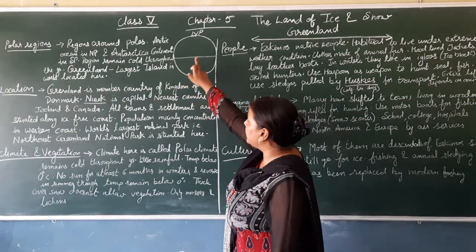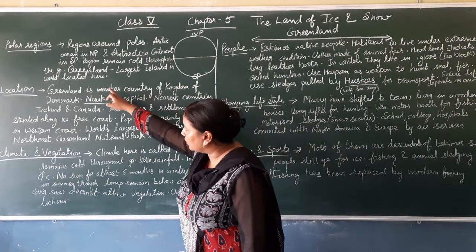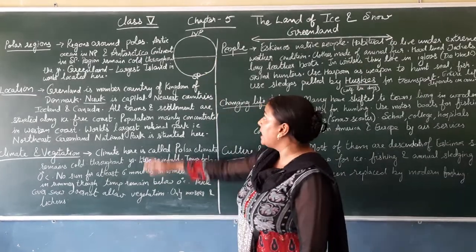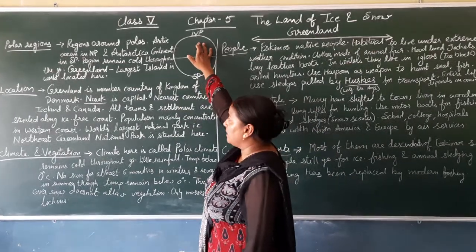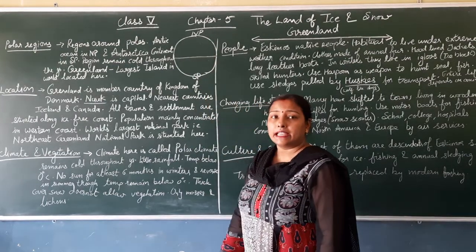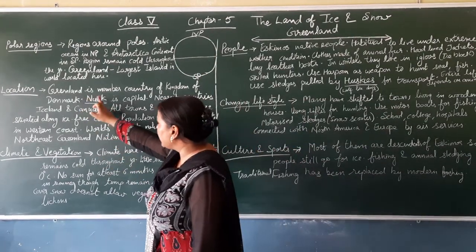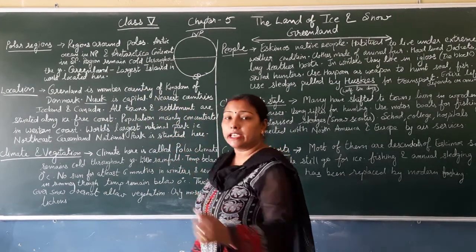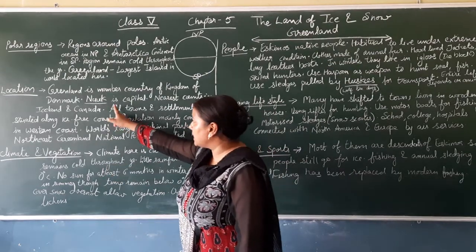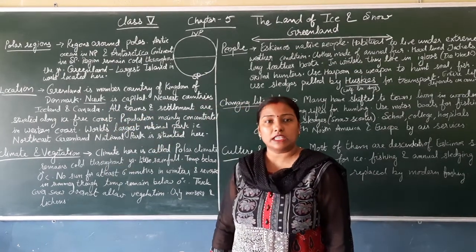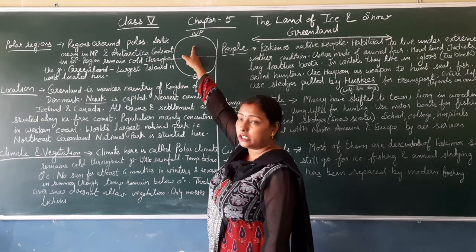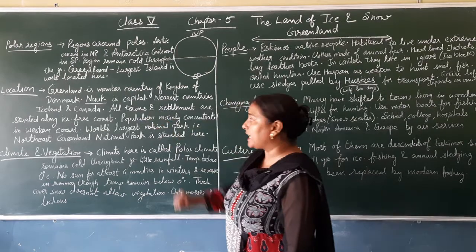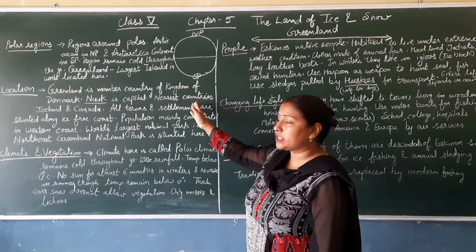Greenland is the largest island in the world, located in the Northern Hemisphere. Let us read about the location. Greenland is a member country of the Kingdom of Denmark. Nuuk is the capital city. It is here in the Northern Hemisphere, in the Arctic region.